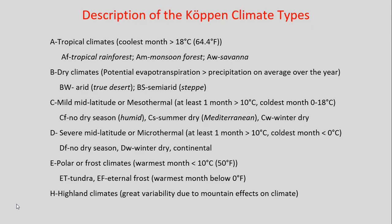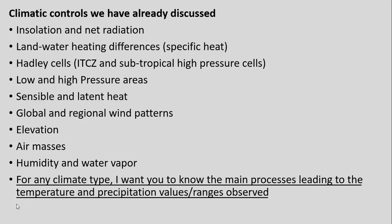We'll be working through each type, seeing this differentiation. Really, breaking this all down is based on two main characteristics: temperature and precipitation. These are the two drivers implemented in these differences and designations, and they're tied to the broader climatic controls we've already discussed.